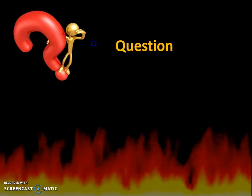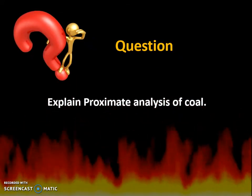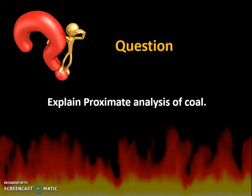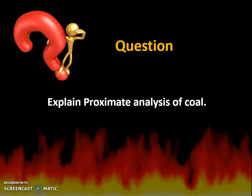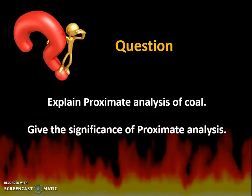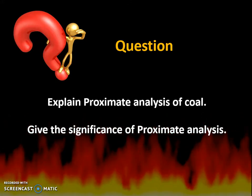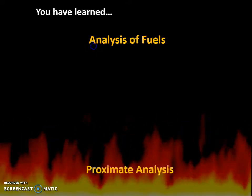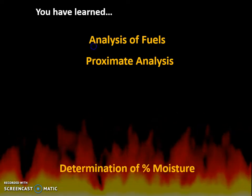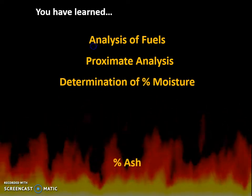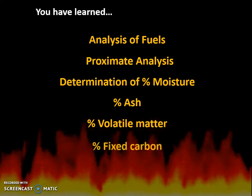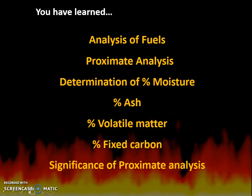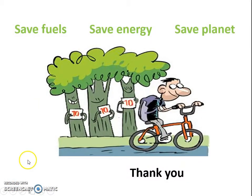The assignment questions for you are: explain proximate analysis of coal in detail, covering percentage moisture, percentage ash, and all other aspects; and explain the significance of proximate analysis. In this lecture, you have learned analysis of fuels — that is, proximate analysis of coal, including percentage moisture, percentage ash, percentage volatile matter, percentage fixed carbon, and their significance. Thank you — save fuels and save energy.